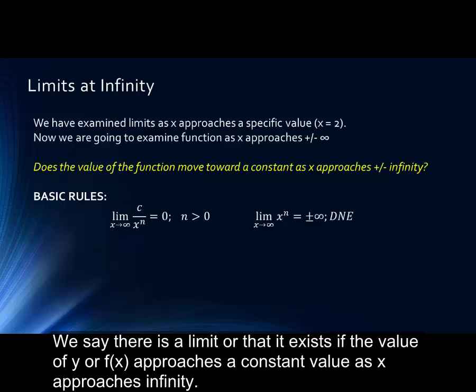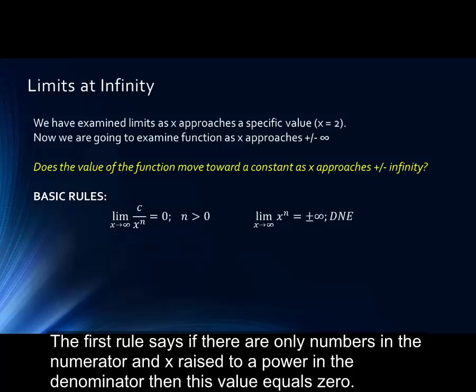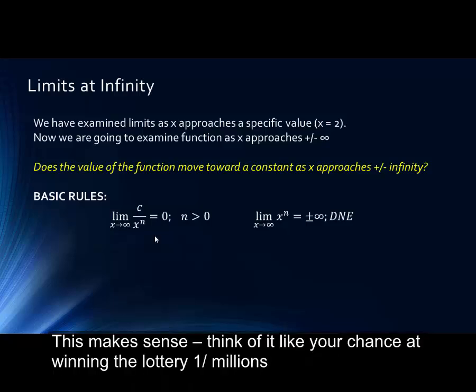Some basic rules help us evaluate equations. The first rule says if there are only numbers in the numerator and x raised to any power, including one, in the denominator, then this value will equal zero. This makes sense. You might think of it like your chance at winning the lottery. You have a very small number in the numerator and a very large number in the denominator, meaning your chances are one in a million.